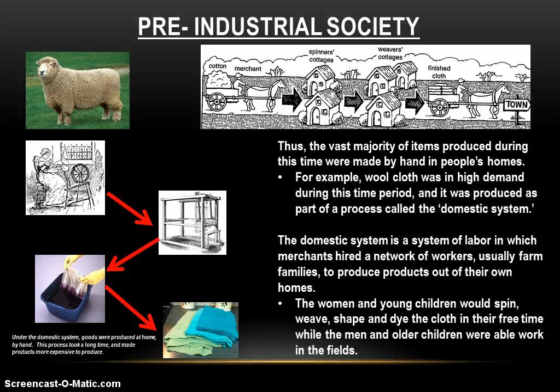It's all done by hand. It's a longer, slower, and much more expensive process. For the farm families, it's pretty good because they make some extra money on the side from farming. But if you're the merchant, it's not particularly efficient. This is how things were made prior to industrialization — through this domestic system. Pre-industrial societies feature work being done at home by hand, products being produced in this fashion.